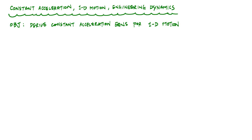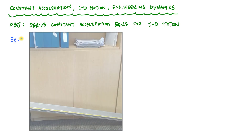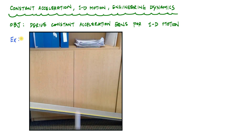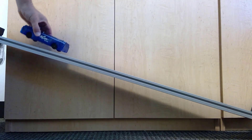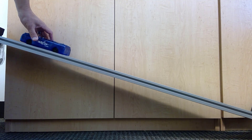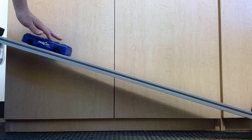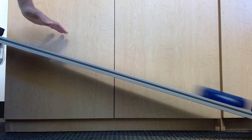We'll derive the equations that are really popular for constant acceleration in 1D motion. Examples of objects that experience constant acceleration include anything that's falling — like when you throw a ball and after you release it, that object is only experiencing constant acceleration due to gravity. In general, anything with acceleration only due to gravity is an example. I'll also show a picture of an incline plane, where an object released from rest on the incline is experiencing constant acceleration.